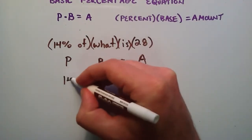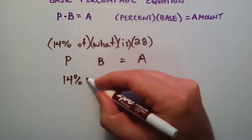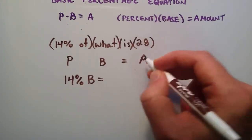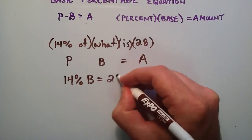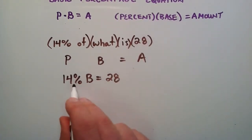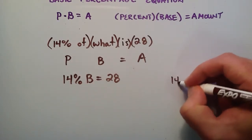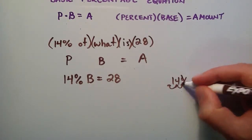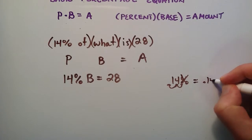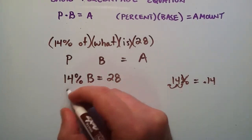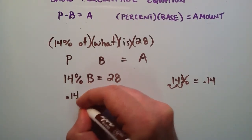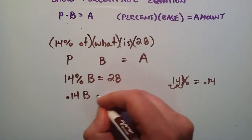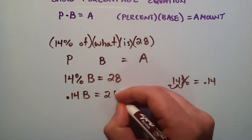In our case, we have 14, our percent, 14% times the base equals the amount, 28. We need to translate this into decimal form so we can do some algebra with it. So 14%, moving the decimal two units to the left and getting rid of the percentage sign, gives us 0.14. Instead of 14%, we're just going to write 0.14 times B equals 28.